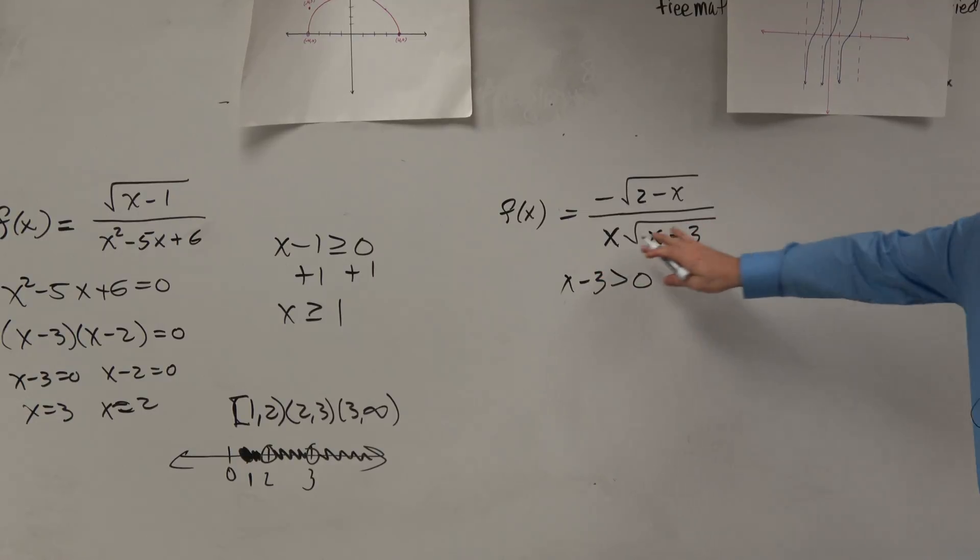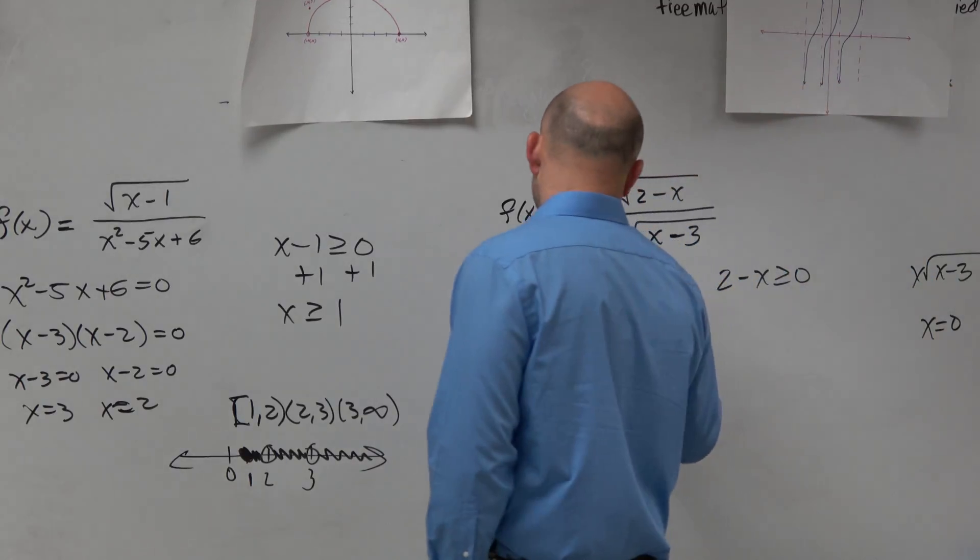So guess what? If you were to solve, you could set the whole thing equal to zero. But what you'd notice is x equals zero is going to make, when x is equal to zero, that makes the whole denominator equal to zero. So in this case, I have x plus 3.